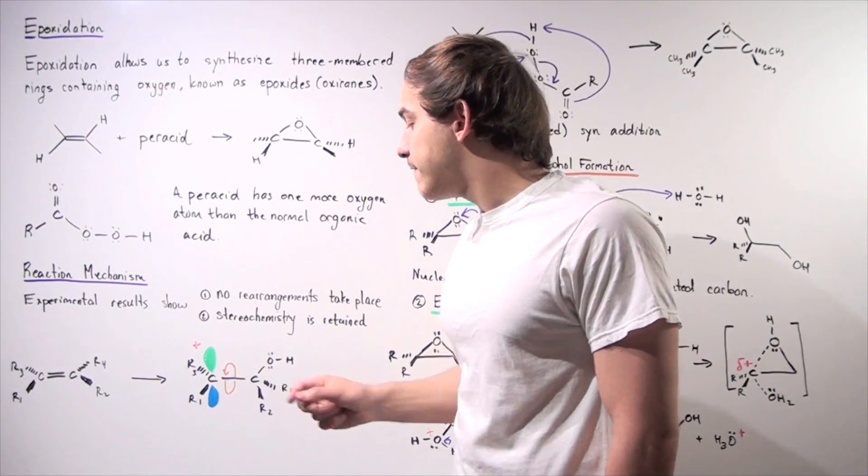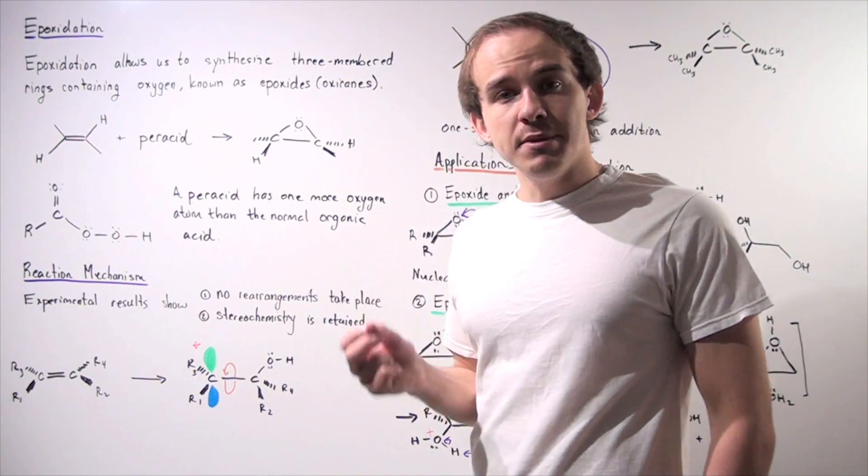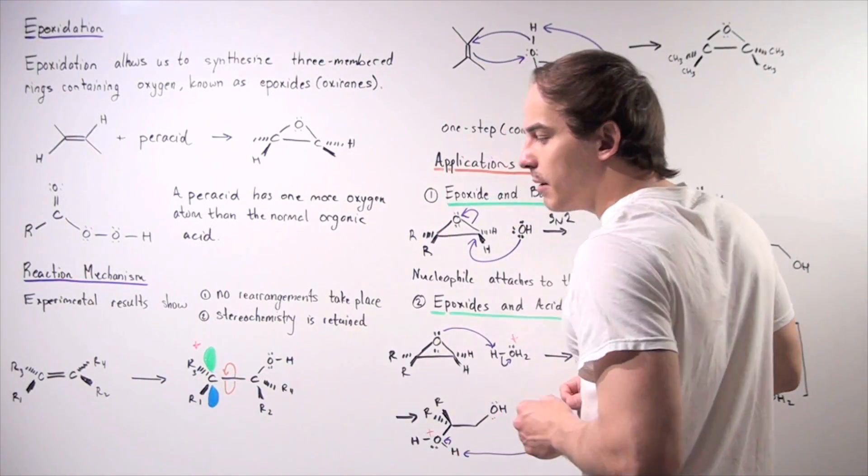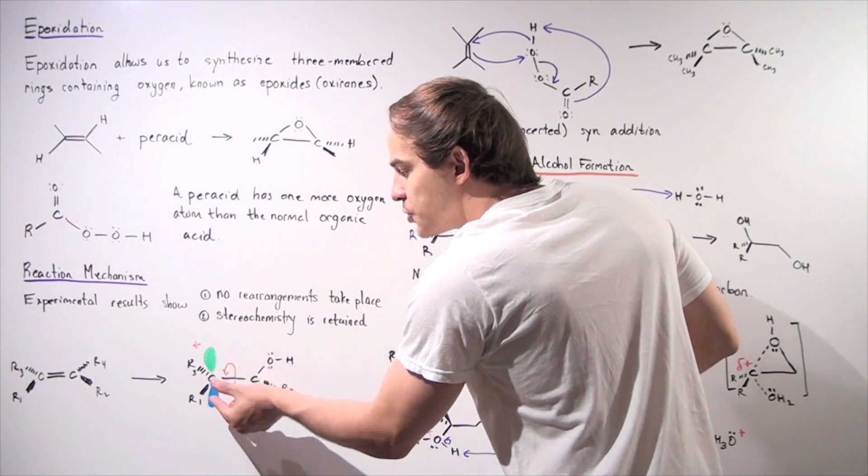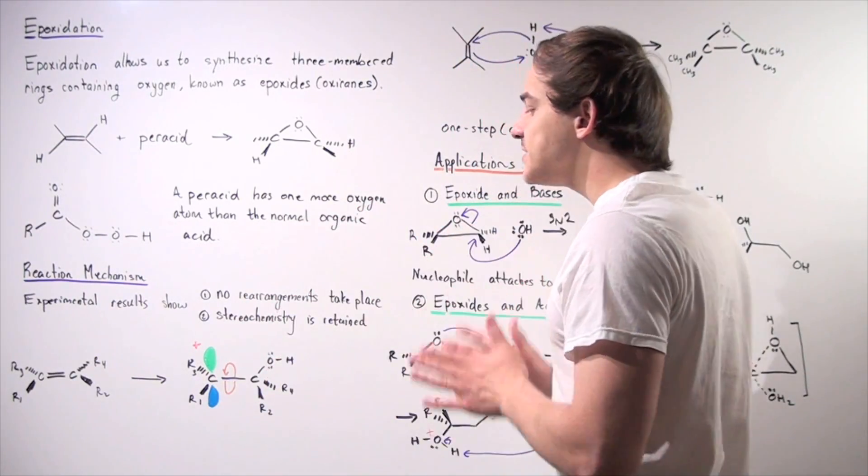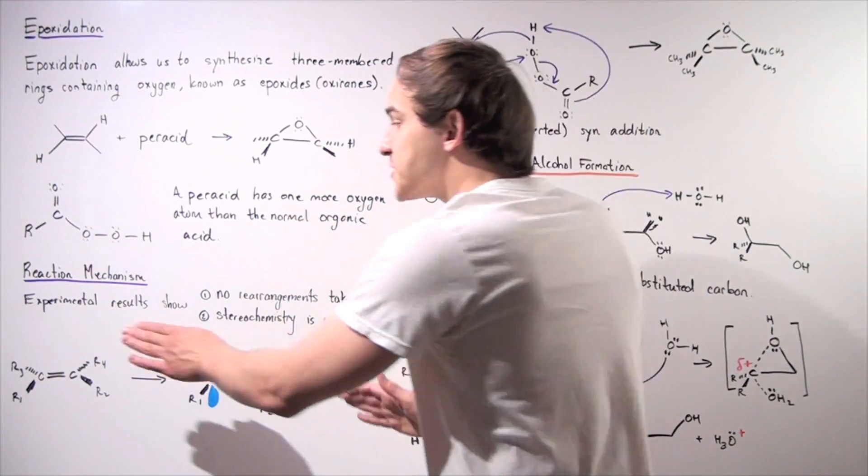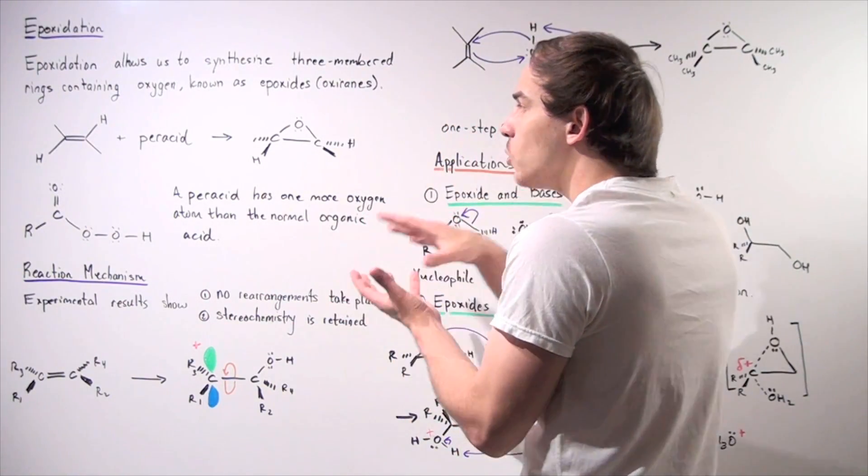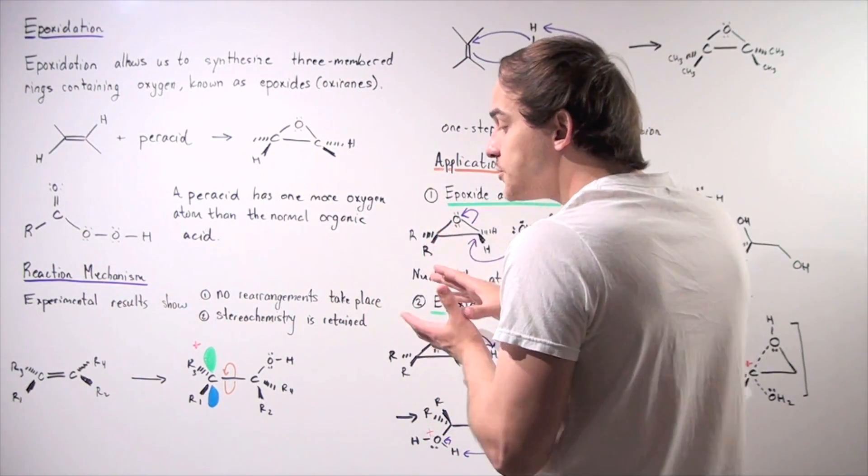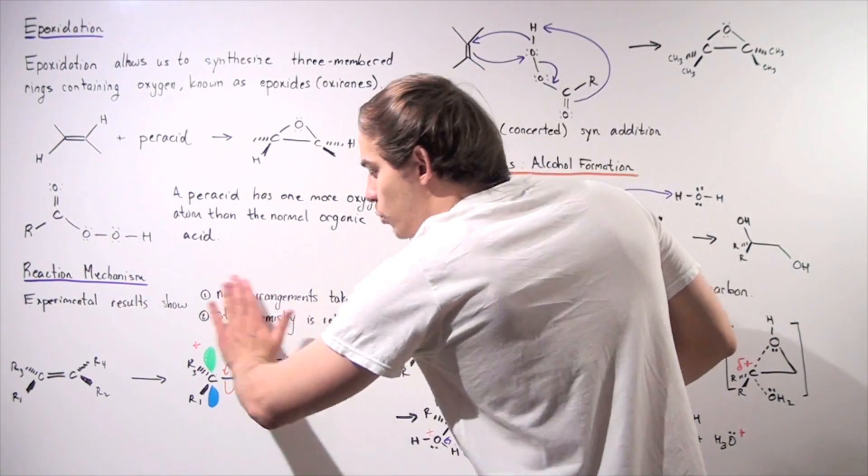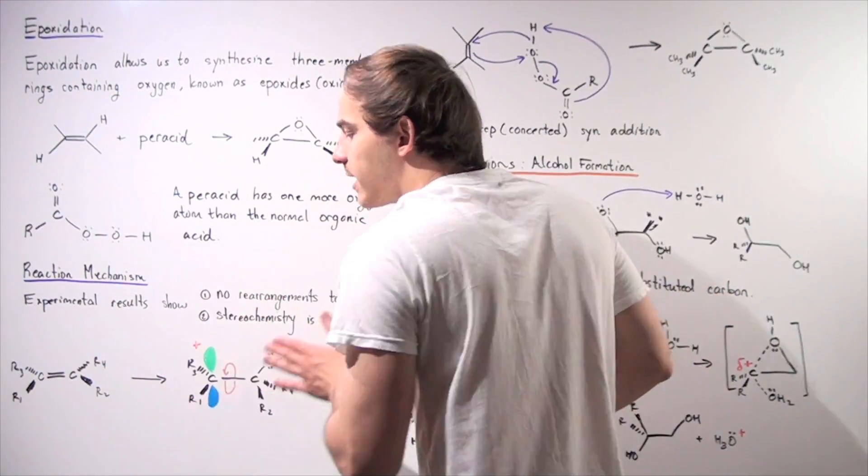In other words, if we have a carbocation intermediate, there can be a rotation of the carbon-carbon bond and this rotation will lead to both cis as well as trans isomers. And because from experimental results we know that we do not form both types of isomers, we only form one of the isomers, that means we cannot have a carbocation intermediate.